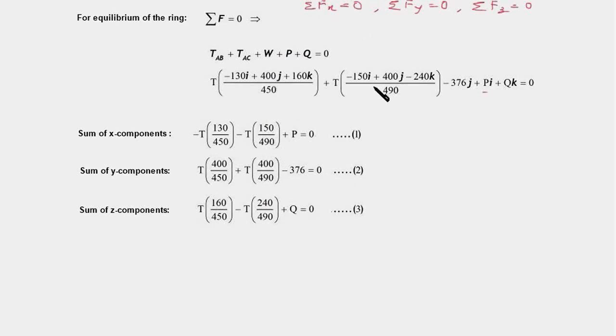And here it will be T times 400 upon 450, which is here. It will be T times 400 upon 490, and we just have minus 376 as the j component. All these three terms together will be equal to zero.